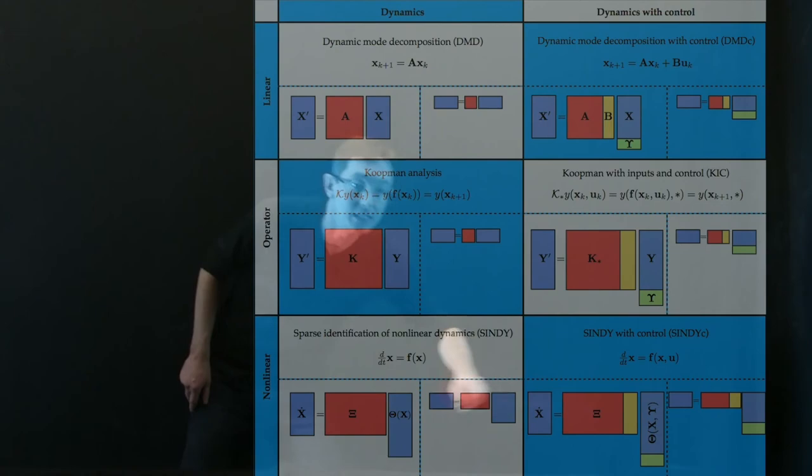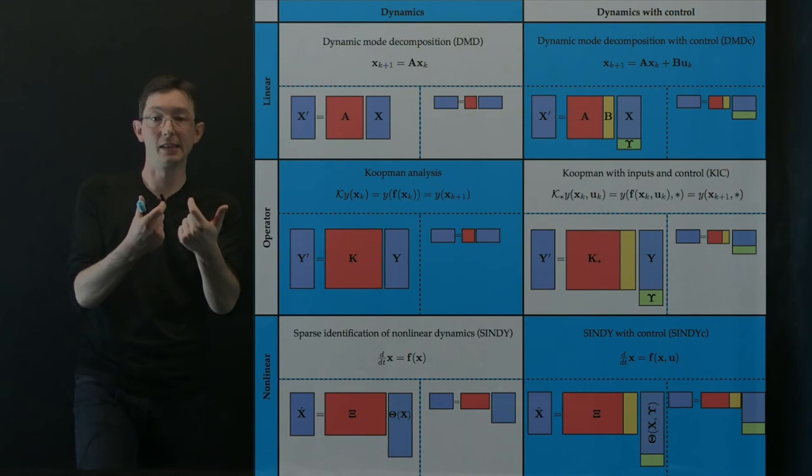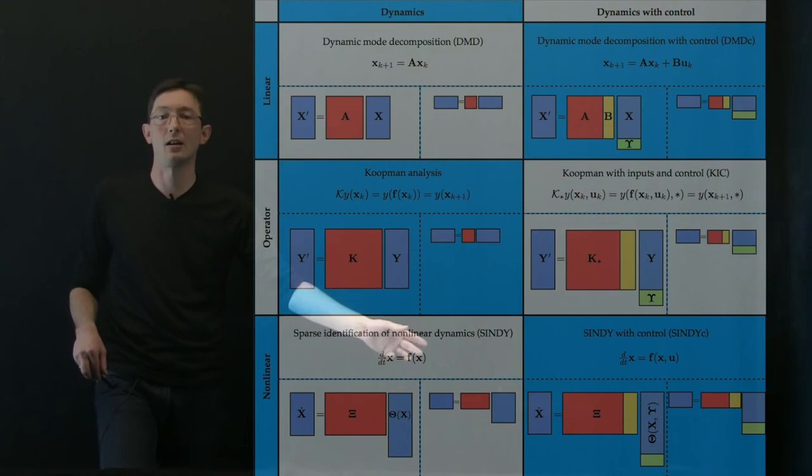And similarly, down here in the SINDY framework, I can build a library of candidate functions, not just of x, but of U. So instead of functions of x, like x, x squared, x cubed, I can have joint functions of the state and control like x u and u squared and cosine of x plus u, things like that. And I can find the sparsest linear combination x dot equals f of x comma u.